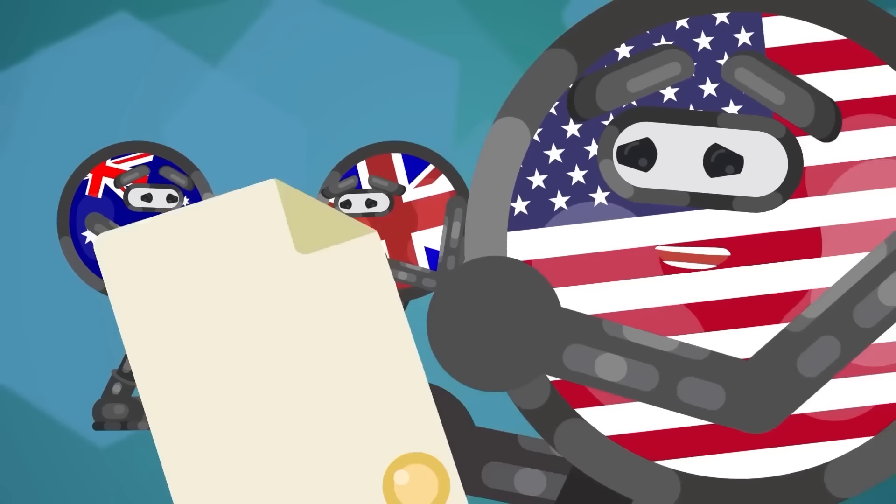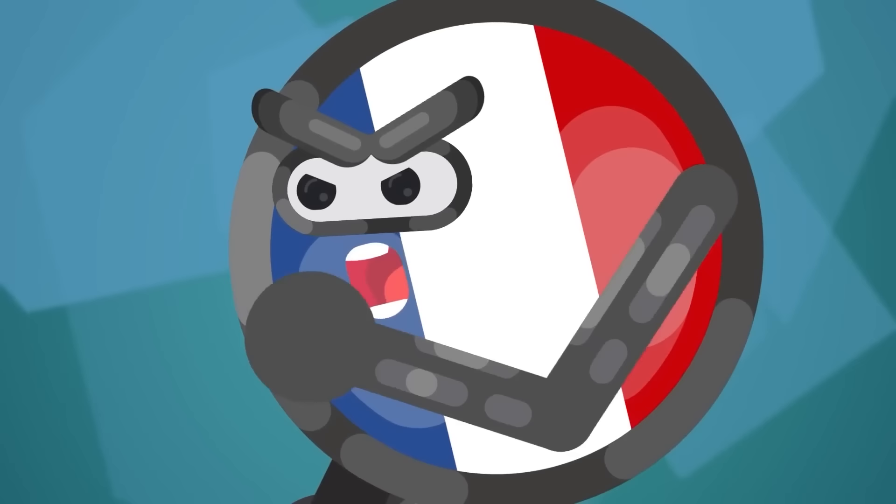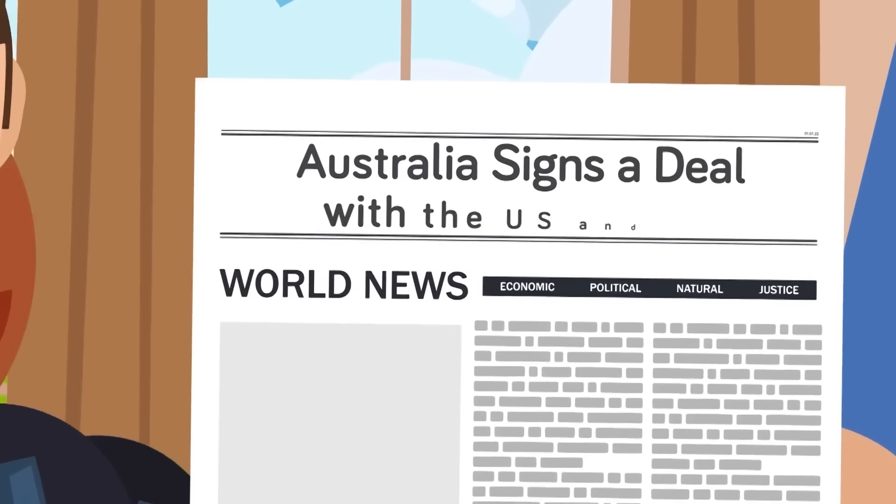France might hate AUKUS just as much as China. Could this mean that France might become closer to China? Let's find out. In order to understand why France is so upset about the nuclear-powered sub-deal between Australia, the United Kingdom, and the US, we need to go back to 2009.